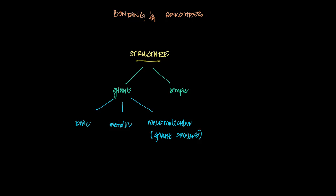Ionic structures are things like solid NaCl, or even calcium carbonate — cement blocks, stuff like that. Metallic structures are of elements only — they are metals. Metals could be sodium, copper, aluminum, silver, gold — all of these have a metallic structure, which is a lattice of cations surrounded by delocalized electrons. The ionic lattice is basically a sequence of positive and negative ions in a square cube arrangement.